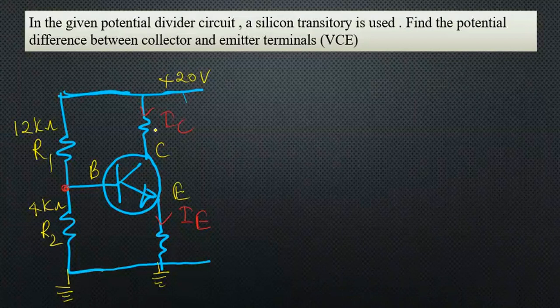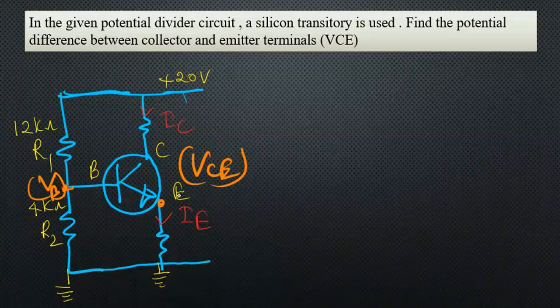Here they are asking us to find the VCE value, potential difference between collector terminal and emitter terminal. But we cannot directly find VCE—there's a procedure for this. Initially we need to find potential VB, then VE, then current IE, then current IC. From that we can find the potential at C, then we take the difference of it.